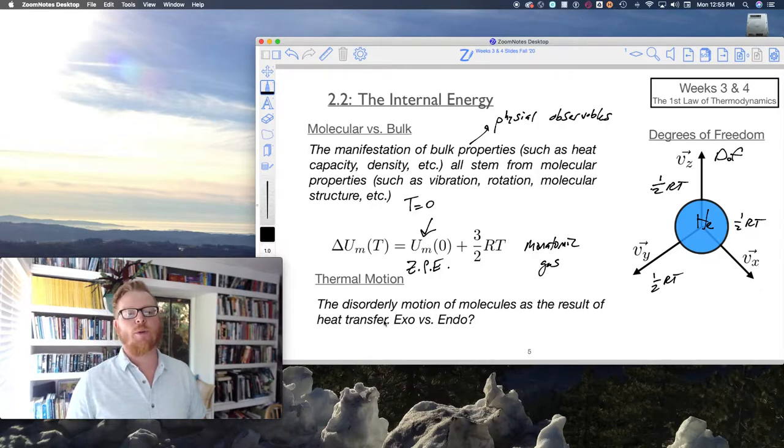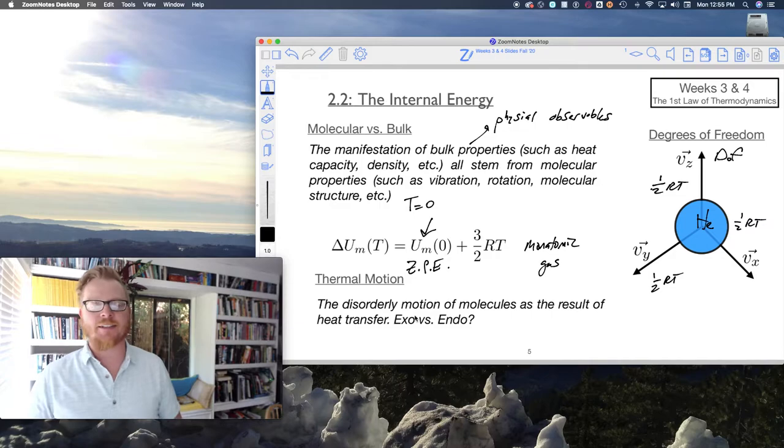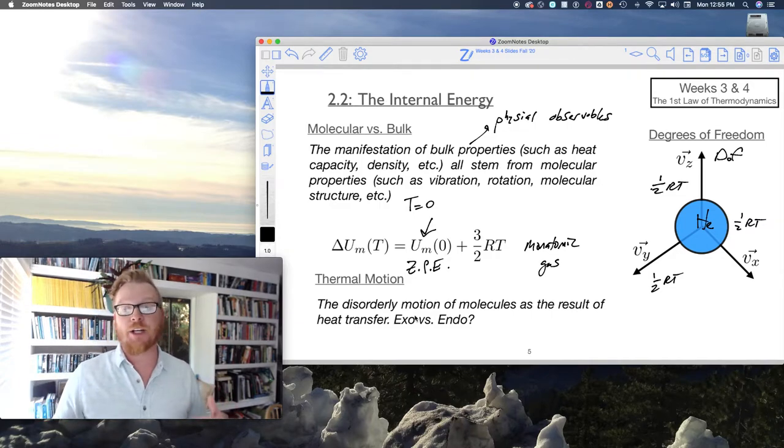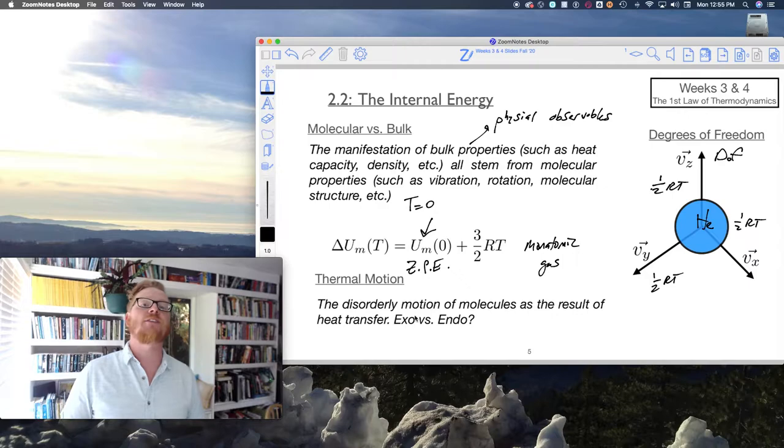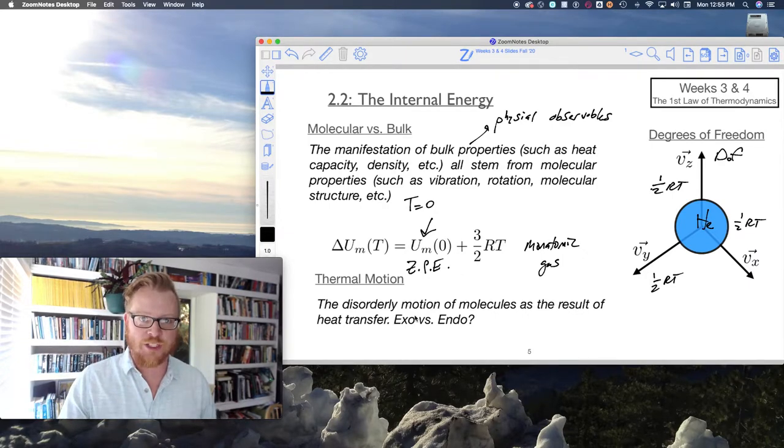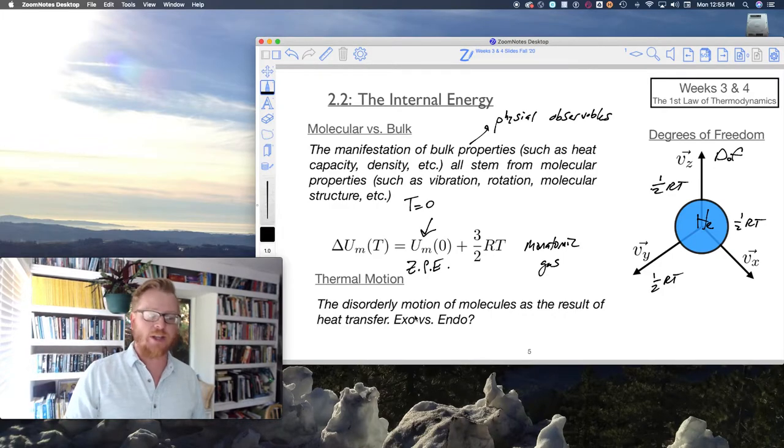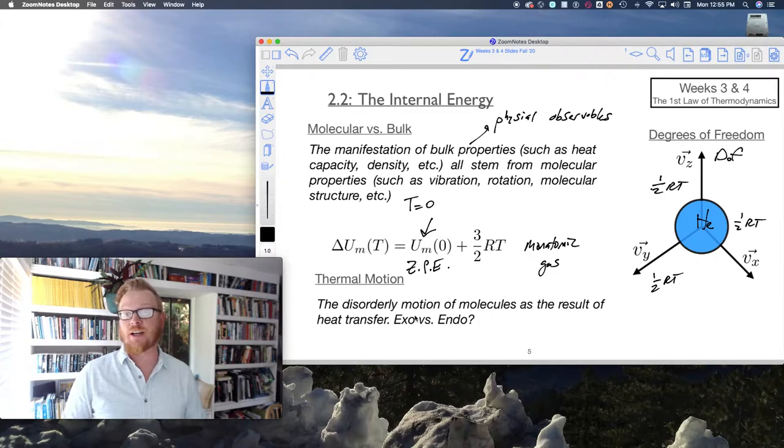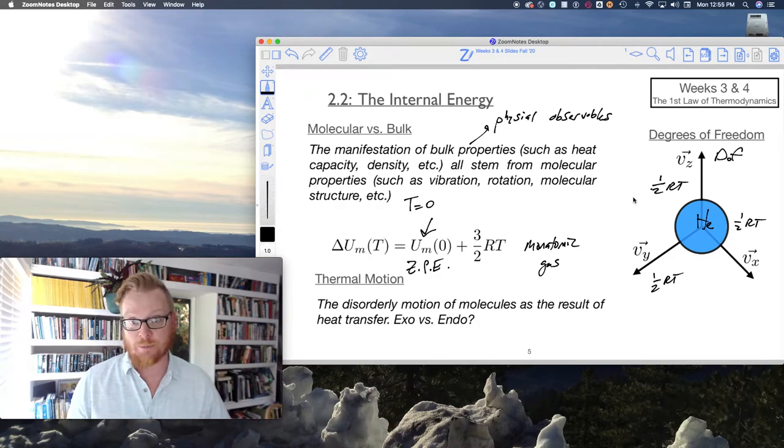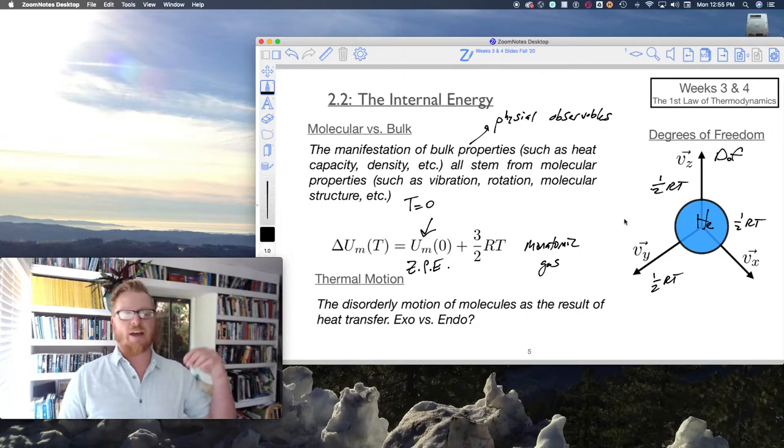So, when we start talking about thermal motion, this disorderly motion, we want to think of this as the rotations, the vibrations, the translations, all of the things the molecule can do and how and where that energy is going to be stored. Is it stored in the translation? Is it stored in the rotation? And, of course, equal partition tells us there's one half RT just for each of these terms. So, there's one half RT for a rotation, one half RT for a vibration, one half RT for a translation.